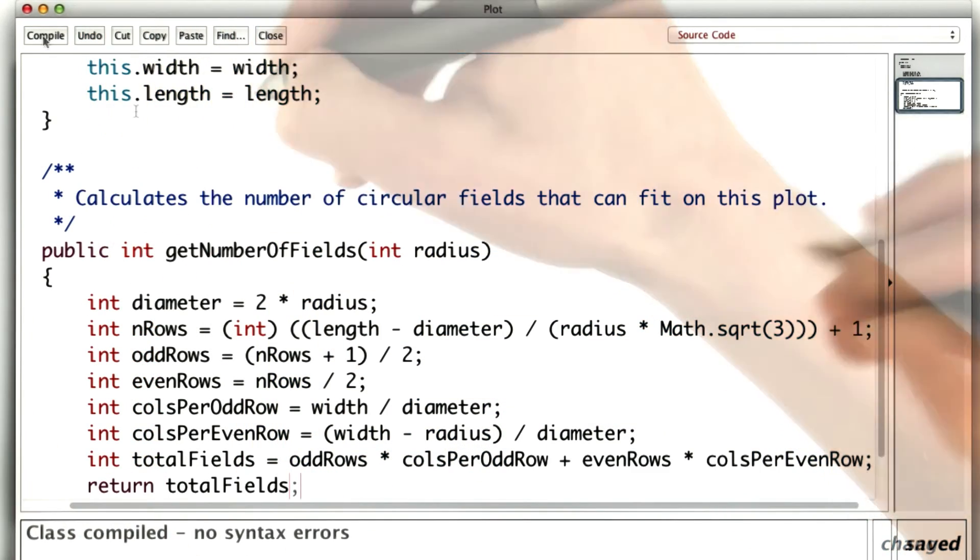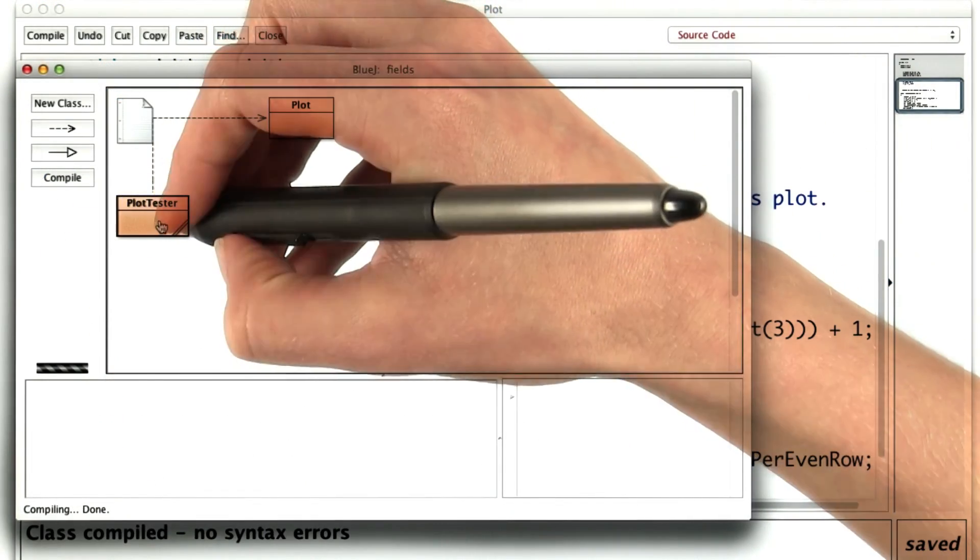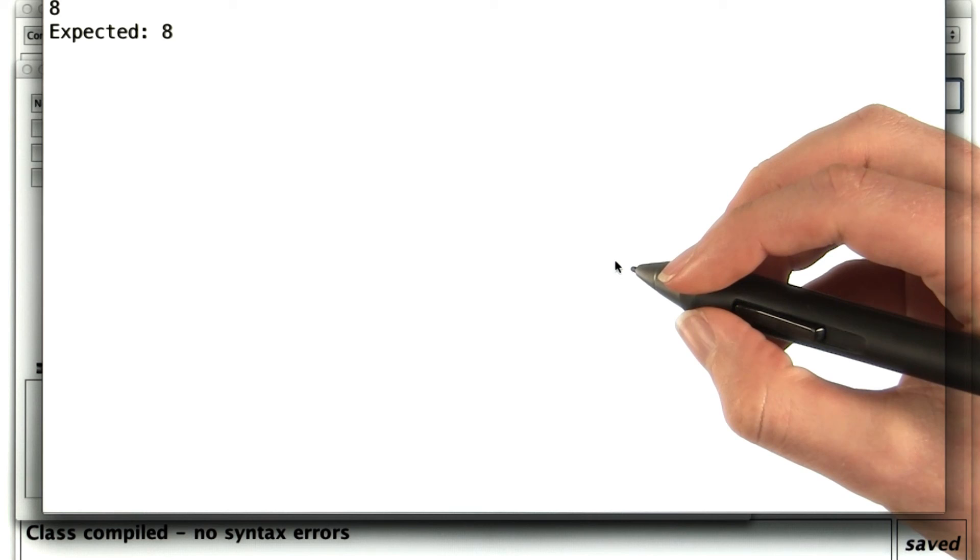Let's find all my typos. Huh, got lucky that time. Let's see if the plot tester agrees. Looks like it at least worked for the example that we checked. That's a good sign.